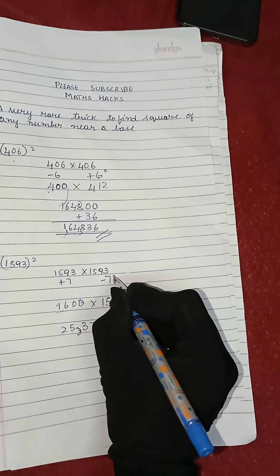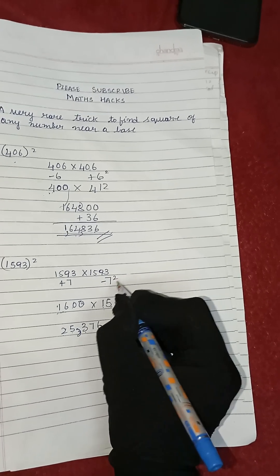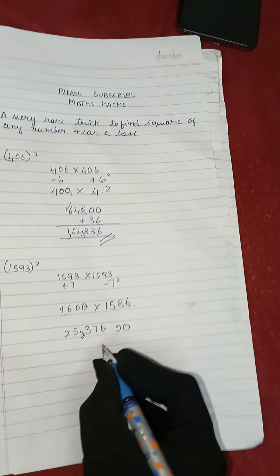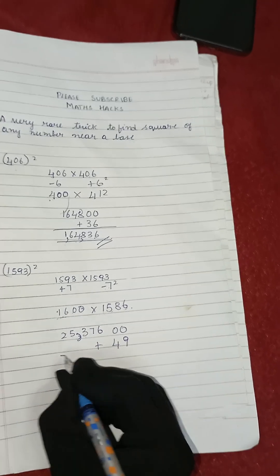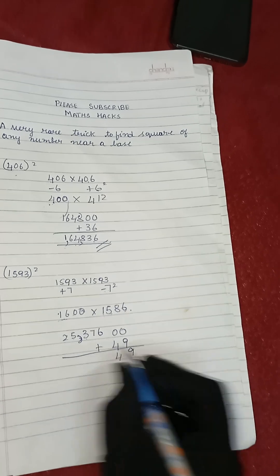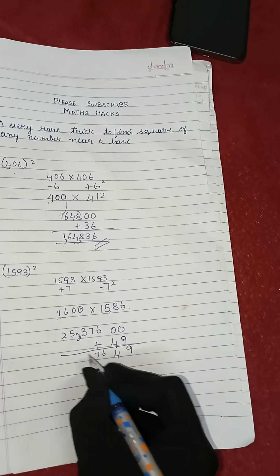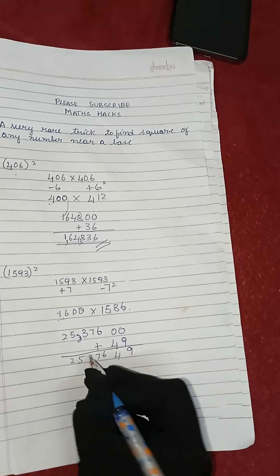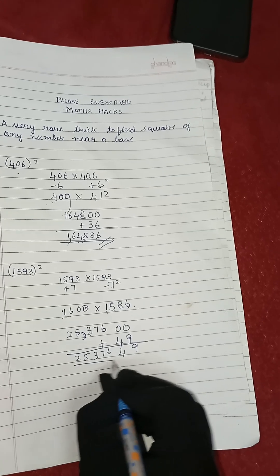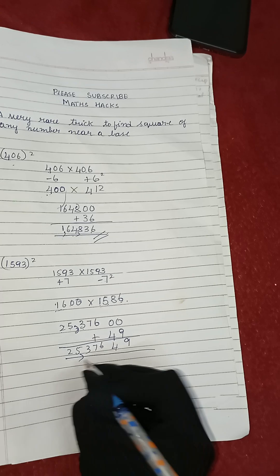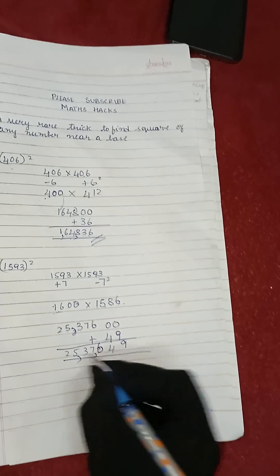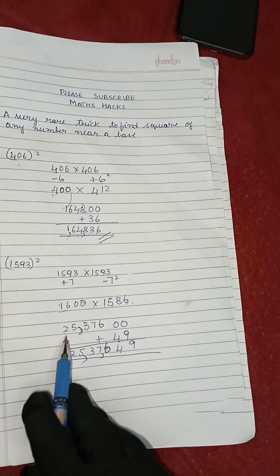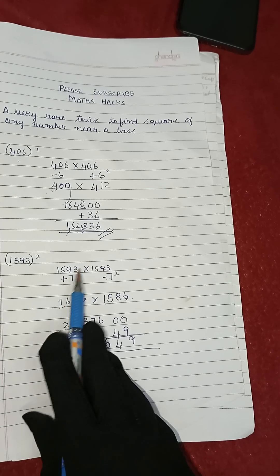Now we have to add which number? We will multiply 7 twice, 7 square. So 7 times 7 is 49. Now we will add 49 to this whole number. So our final answer here is 25,37649.